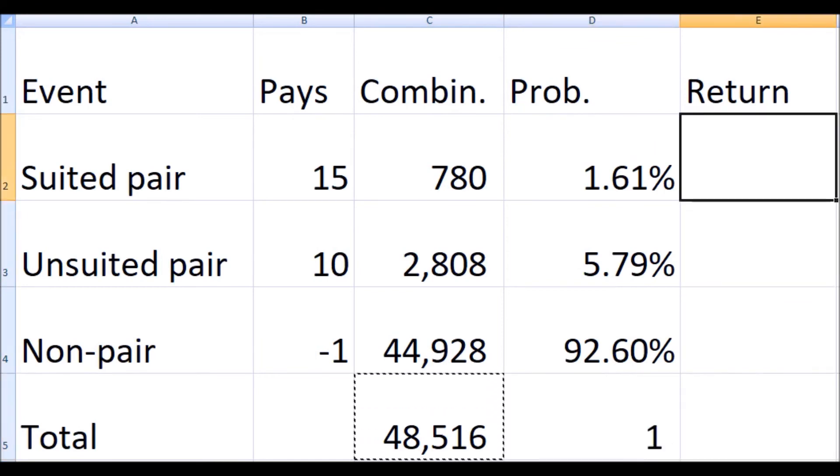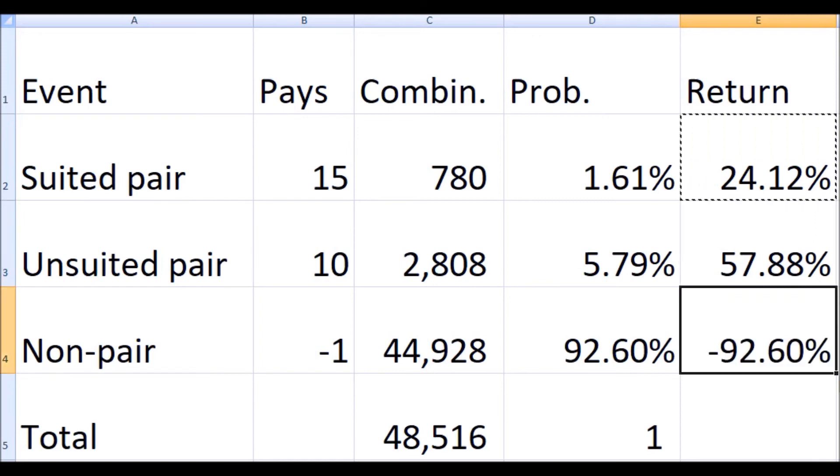Next, the way I like to analyze a bet is to simply multiply the win times the probability. So the return from a suited pair is 15, the win, times the probability of getting one, 1.61 percent, which comes to 24.12 percent. Using that same formula, we see that the return from an unsuited pair is 57.88 percent and the return from a non-pair is a negative 92.6 percent. So what this means is that if the player bets a dollar, for example, he can expect to get back 24.12 cents from his suited pairs, 57.88 cents from his unsuited pairs, but lose 92.6 cents from his non-pairs.